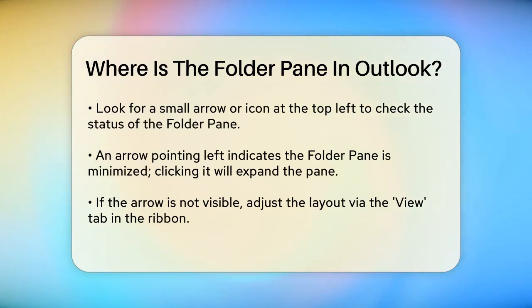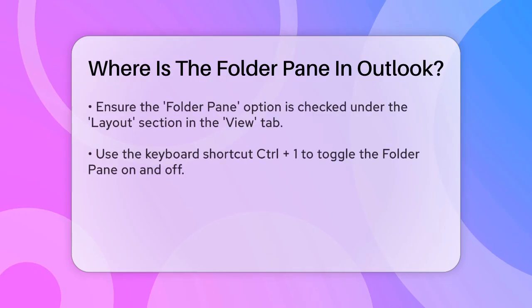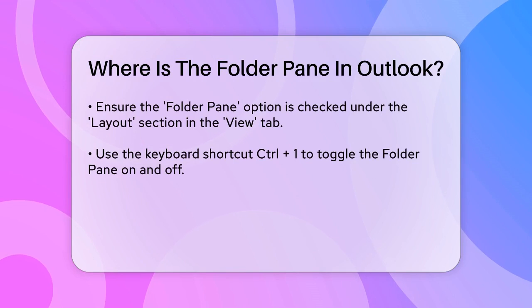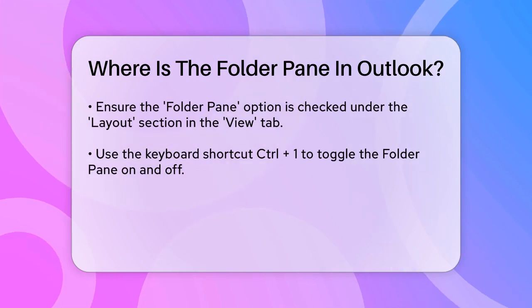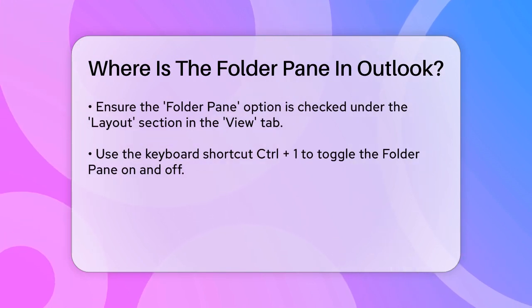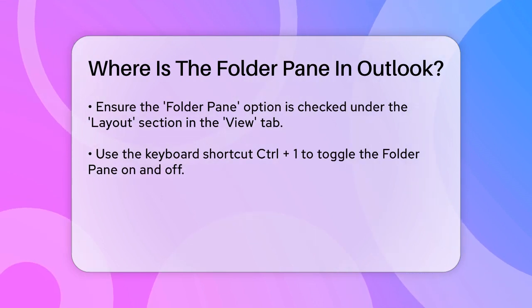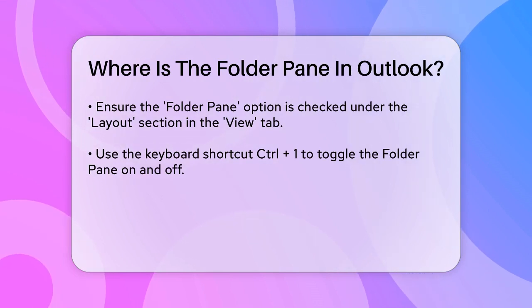If you don't see the arrow, you might need to adjust the layout. Go to the View tab in the ribbon at the top of the screen. Here, you'll find options to customize your Outlook layout — make sure the folder pane option is checked under the Layout section.